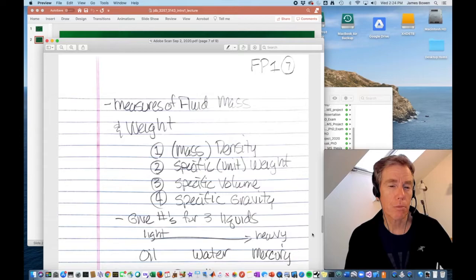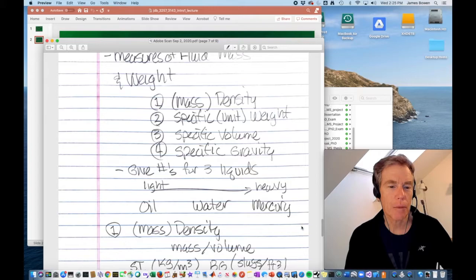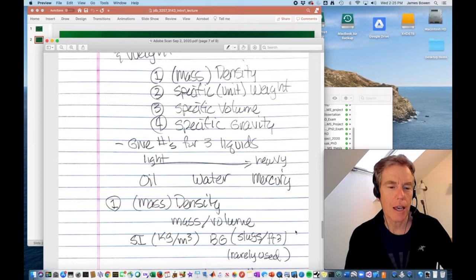A dimensionally consistent equation that is the summation of several terms must have those terms with identical dimensions for it to be dimensionally consistent. The final topic for today is the measures of fluid mass and weight. There are four of those. Density or mass density. This book refers to it as density. I generally refer to it as mass density. The second measure is specific weight or unit weight. I like to say unit weight. It makes more sense to me. This book calls it specific weight. The third is specific volume. And the fourth is specific gravity. Through our looking at each of these measures, I'm going to give you numbers for three particular liquids. That are one that's light to heavy. That is oil, 30 weight oil, water, and mercury.